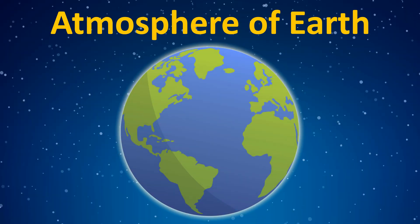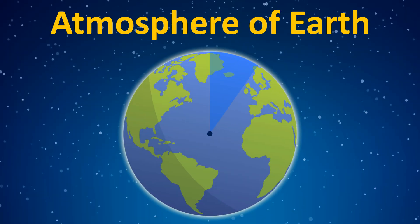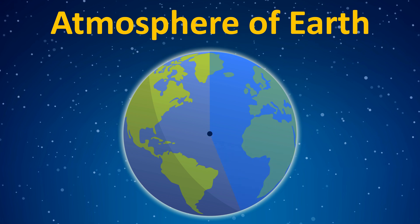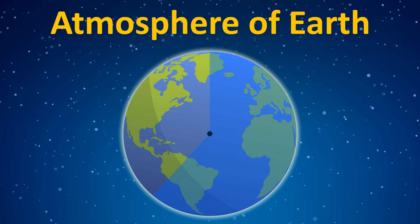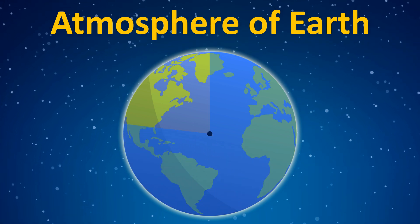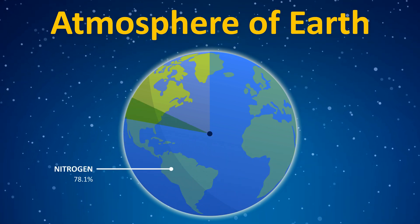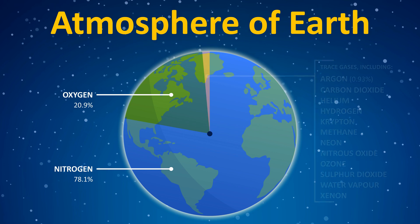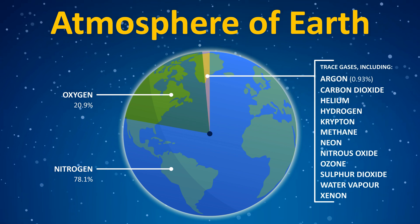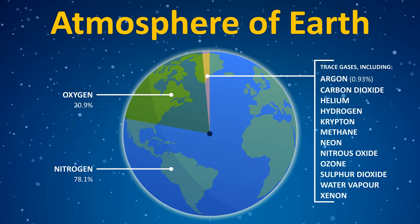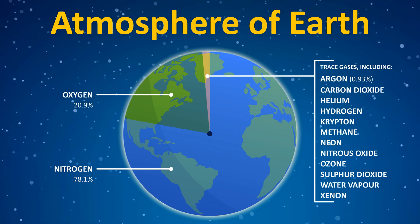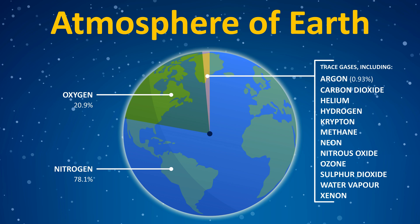What is Earth's atmosphere? Earth is surrounded by its atmosphere, which is the body of air or gases that protects the planet and enables life. The three major constituents are nitrogen, oxygen, and argon. Earth's atmosphere has five distinct layers.